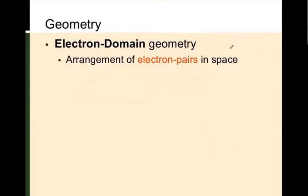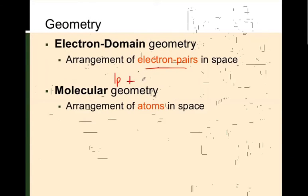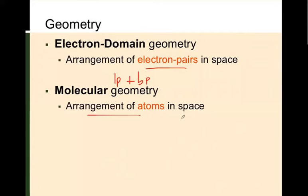Electron domain geometry is the arrangement of all electron pairs in space, considering both lone pairs and bond pairs. Molecular geometry is the arrangement of atoms in space, only considering the bonding pairs. There's no distinction made between single, double, and triple bonds in either case. It is possible therefore to have two different descriptors for the same molecule, depending on whether we're considering molecular geometry or electron domain geometry.